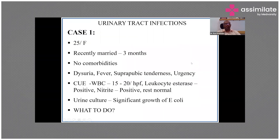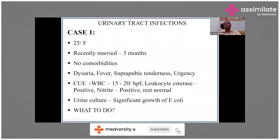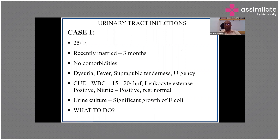Now, moving from the didactic theoretical part to the clinical side, let me share a case. This was a 25-year-old lady who had been recently married for the last three months, no comorbidities — no diabetes, hypothyroidism, blood pressure, or kidney disease. A young healthy lady who presented with dysuria, fever, suprapubic tenderness, and urgency — classic cystitis.